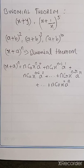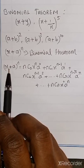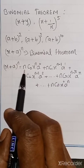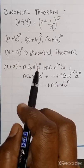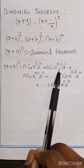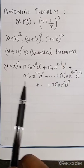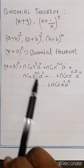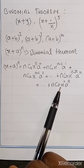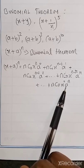Again, if the power is higher, what theorem do we use? Binomial theorem. And what is the binomial theorem formula? X plus A power N equals NC0 X^N A^0 plus NC1 X^(N-1) A^1 plus NC2 X^(N-2) A^2, and so on, with the last term being NCn X^0 A^N.